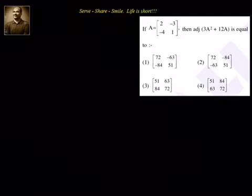Let us look at this problem related to matrices. We have been given that A equal to [[2, -3], [-4, 1]]. Then we have to find out adjoint of 3A² plus 12A, which is equal to one of these options.